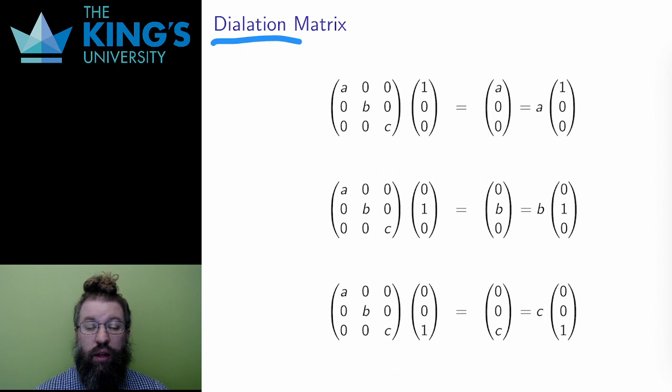A dilation matrix stretches each axis by a factor, the x-axis by A, the y-axis by B, and the z-axis by C. Since each axis is stretched, each axis vector is an eigenvector. And I can see this explicitly in the matrix action.